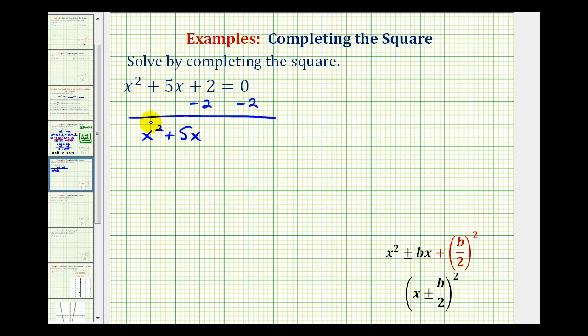Now we're going to make this a perfect square trinomial by adding a constant. We'll put plus blank equals, and on the right side we'll have negative 2. To maintain equality, we'll also add the same constant on the right, so plus blank here as well.